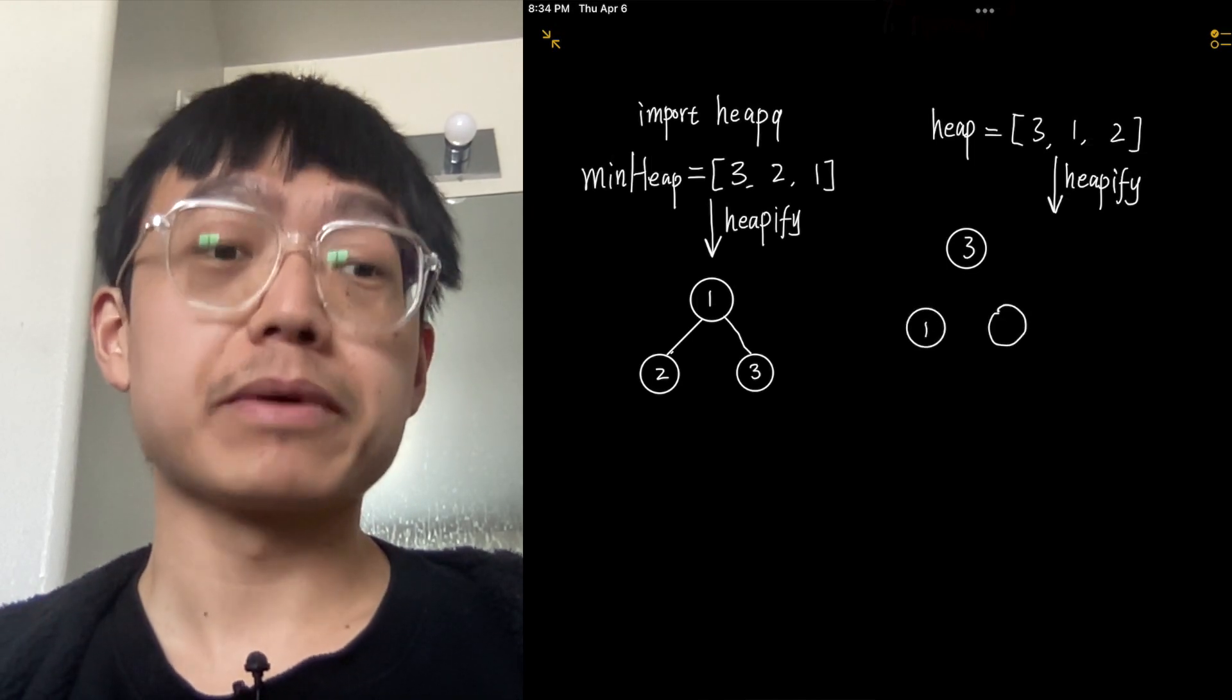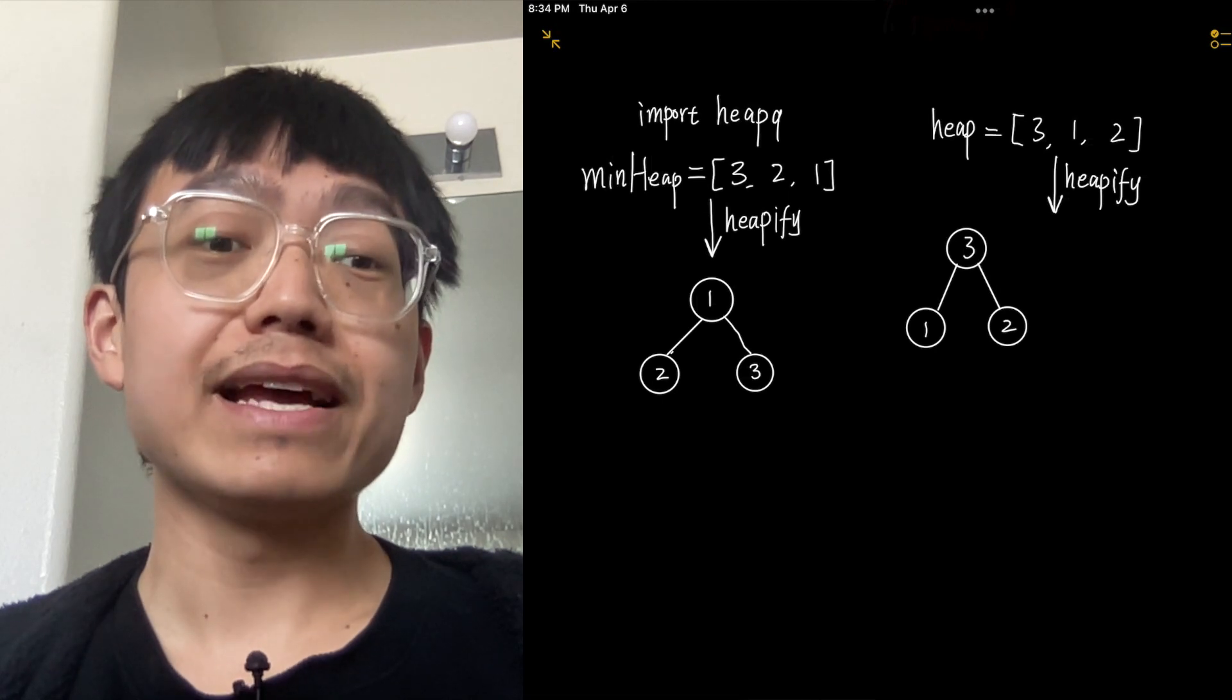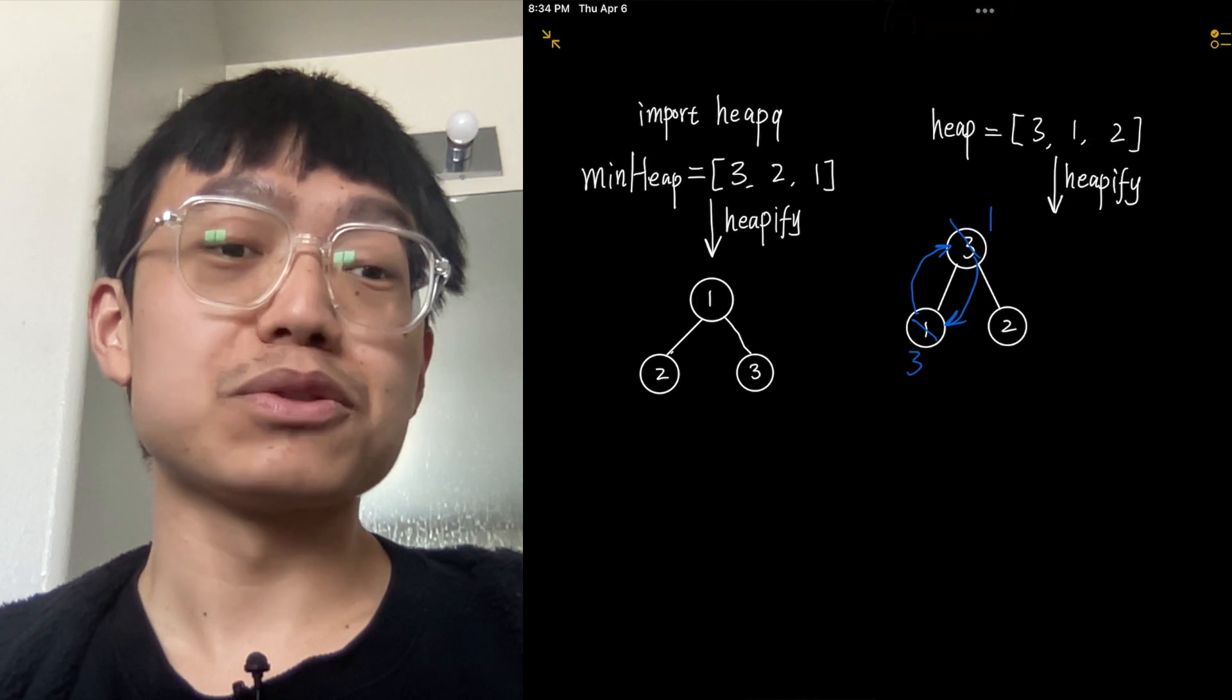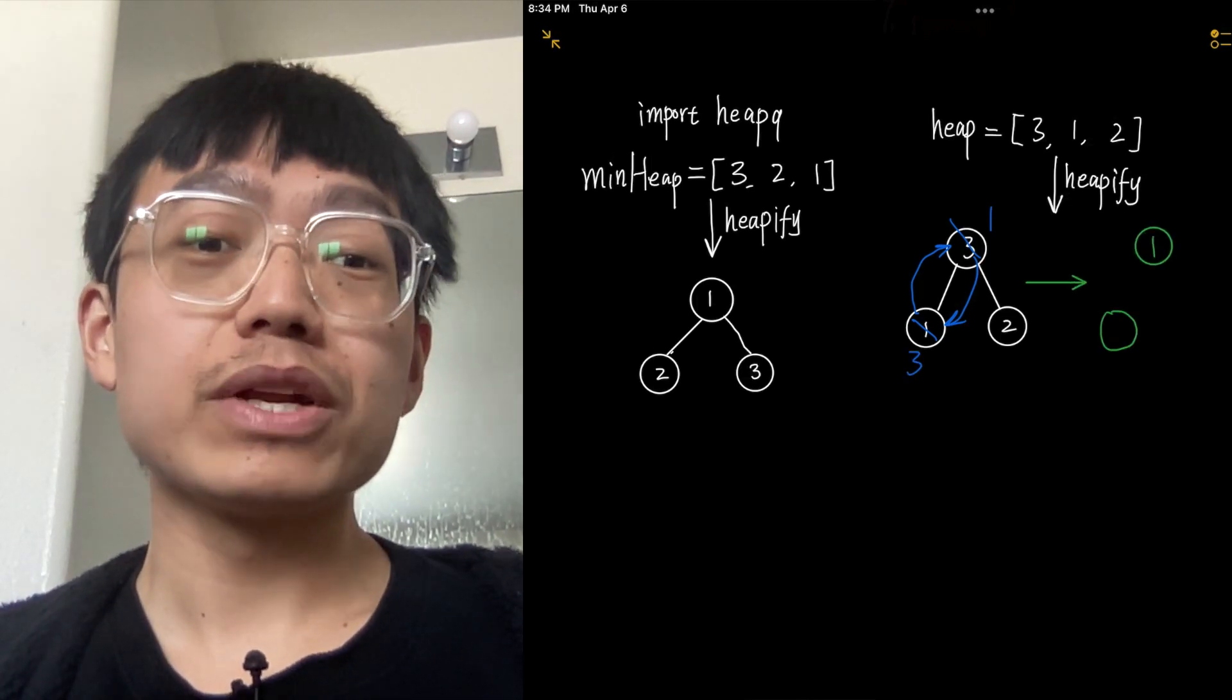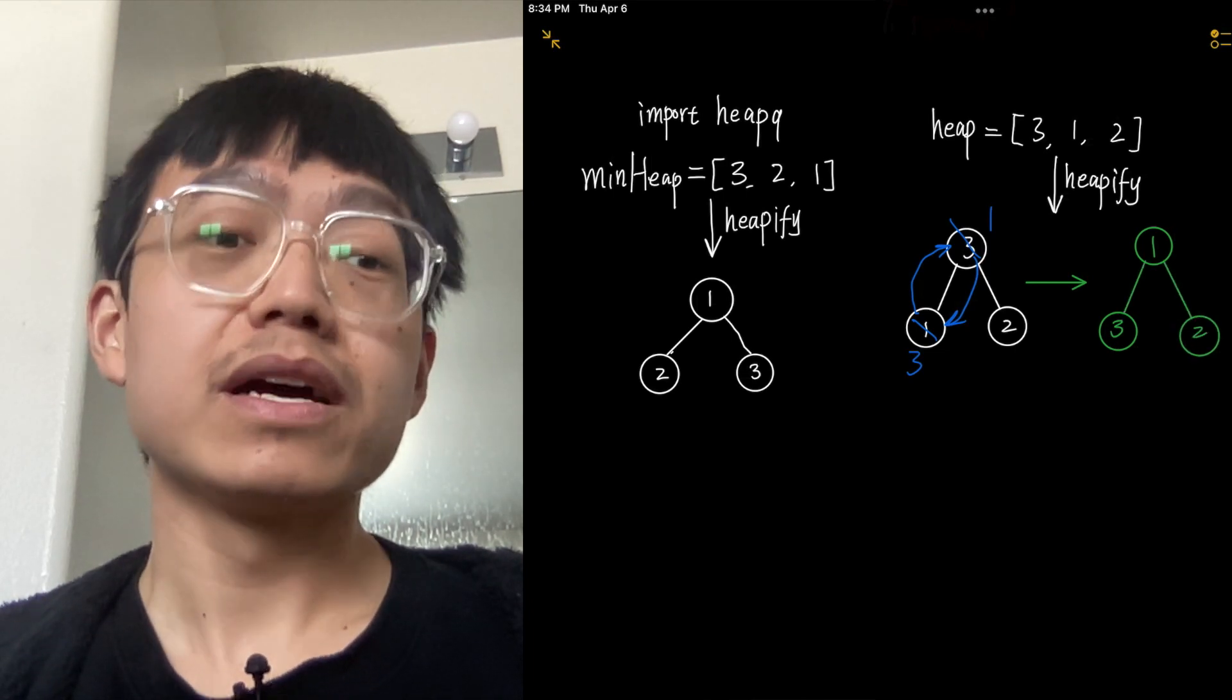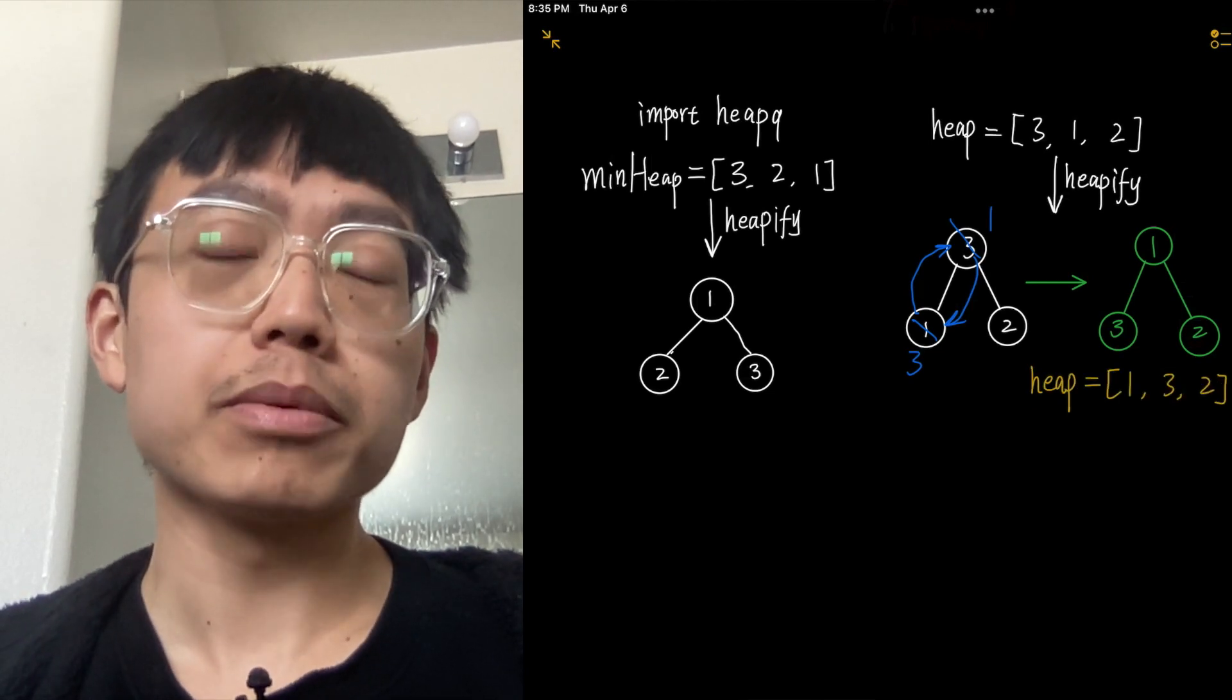Now the heap is a minimum heap containing the elements 1, 2, and 3. The elements are organized so that the smallest element, 1, is at the root of the heap, and each parent node is less than or equal to its child nodes. The heapify process organizes the elements in a way that satisfies the heap property.